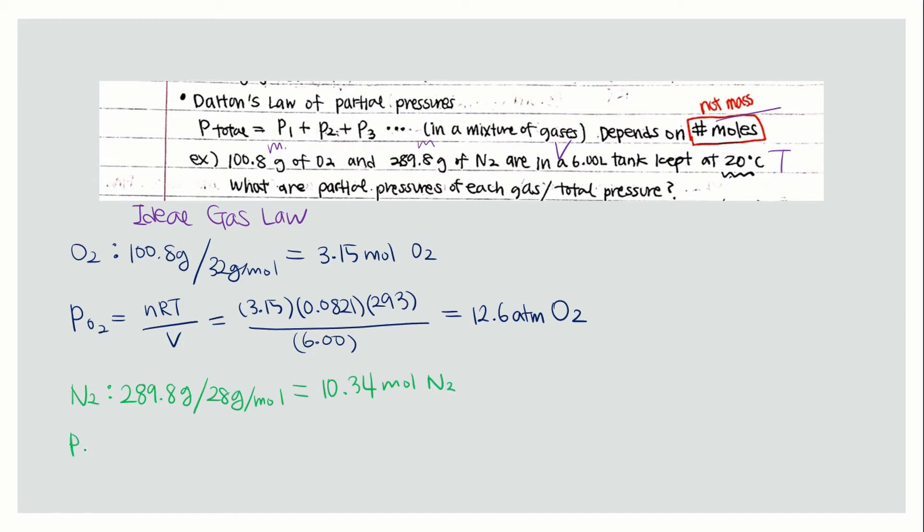Use ideal gas law. Partial pressure for nitrogen equals nRT over V. 10.34 moles times the R value for atm, then 293 the temperature, then 6.00 liters, which equals 41.5 atm nitrogen.